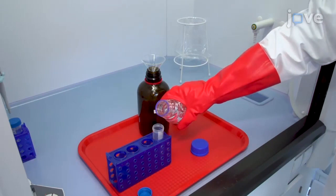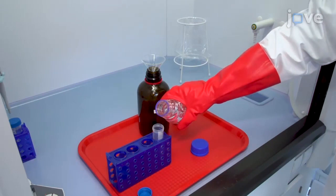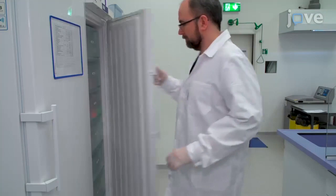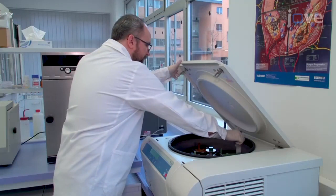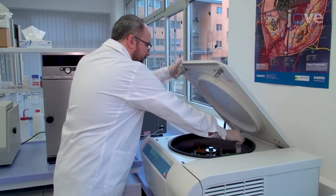Re-suspend the pellet in 50 milliliters of pre-cooled ethanol-diethyl ether mixture and vortex briefly. Incubate a second time for 2 hours at negative 20 degrees Celsius. Centrifuge again at 2500 times G for 10 minutes at negative 10 degrees Celsius.